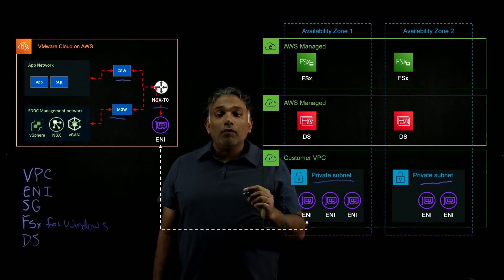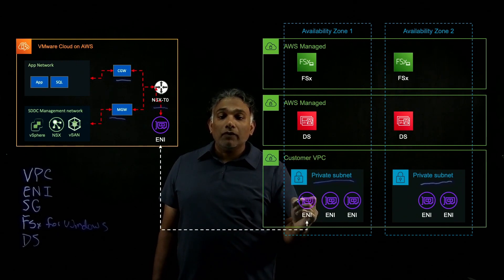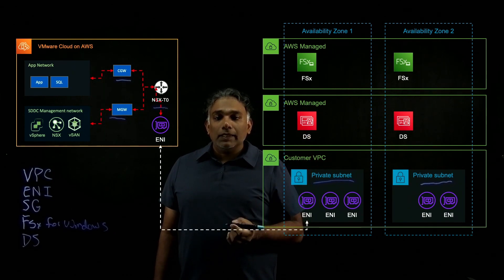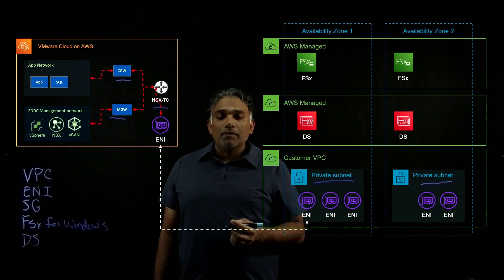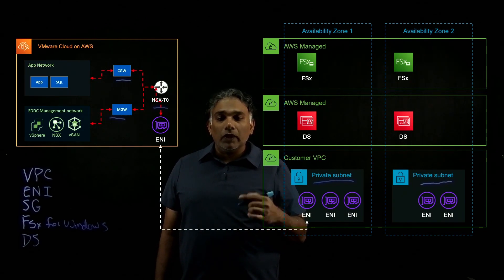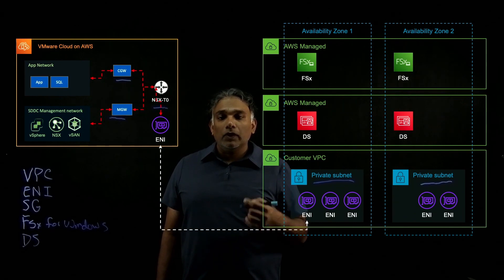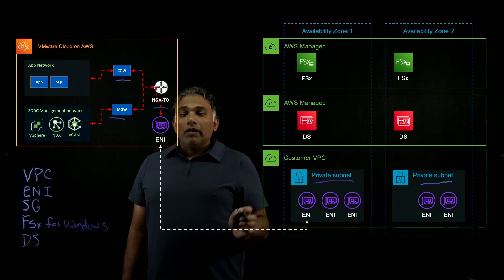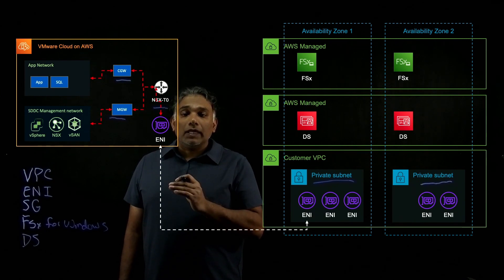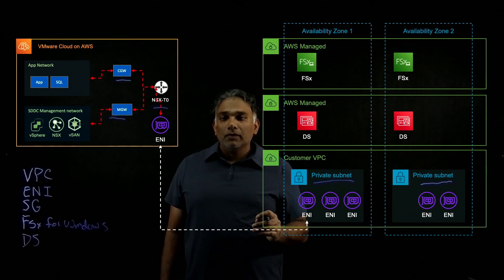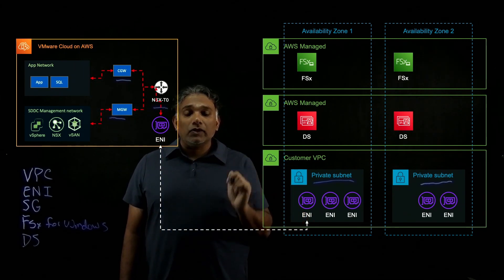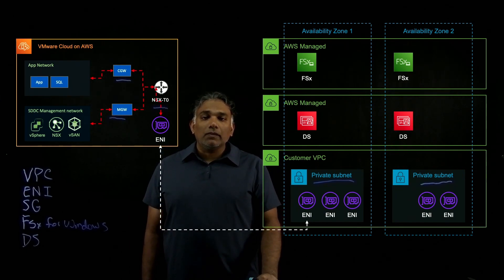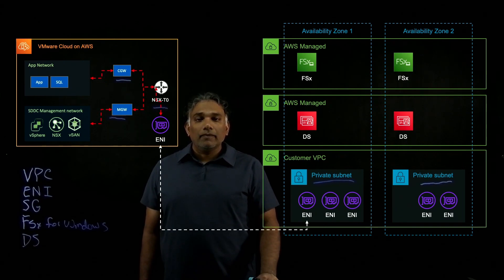To ensure proper connectivity to these services, make sure you have your security group set up to allow those ports. Remember that Directory Services requires at least port 389, 553 for DNS, and additional TCP and UDP ports available in our documentation on our website. Once you have all the firewall rules set up on the NSX and your security groups, the traffic will be allowed across that ENI and that low latency connection between the two environments. Your workloads will then be able to access these services over that ENI. That's it for today's session. Thank you for joining me. We encourage you to look at some of our other videos on other topics that might interest you.